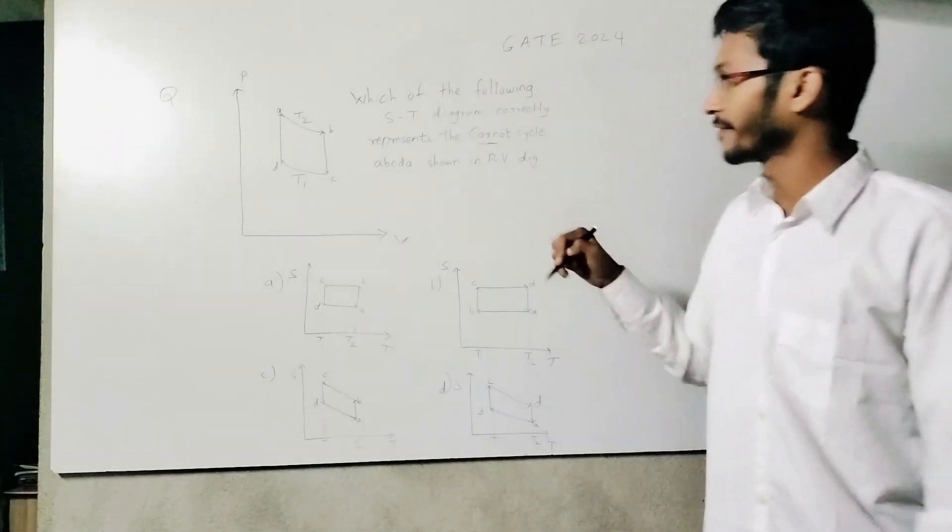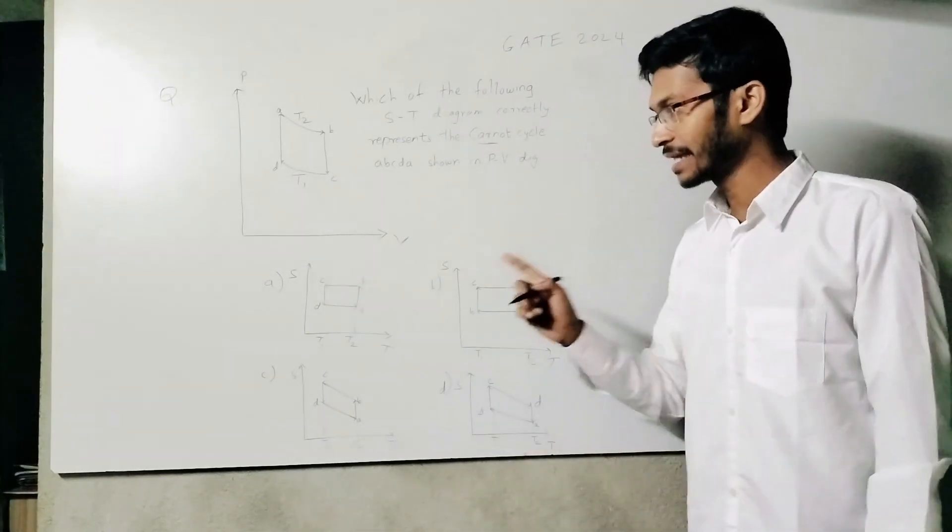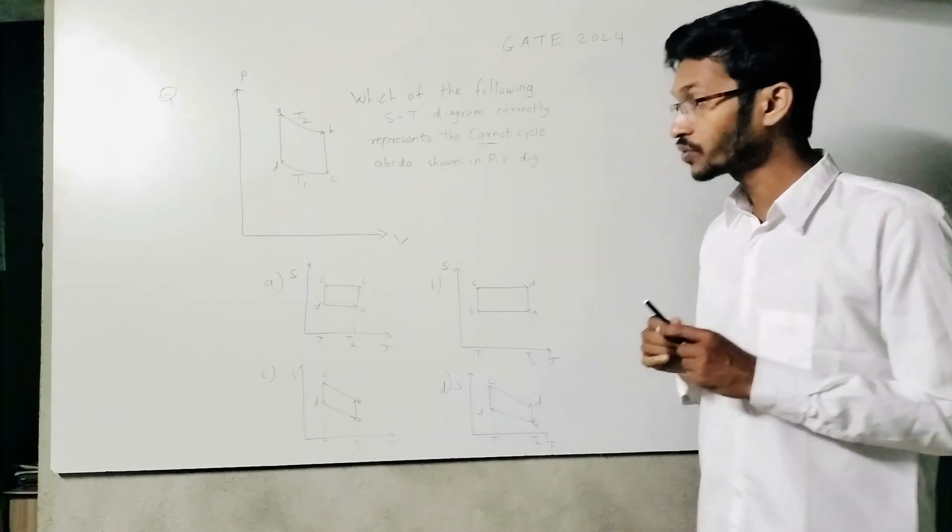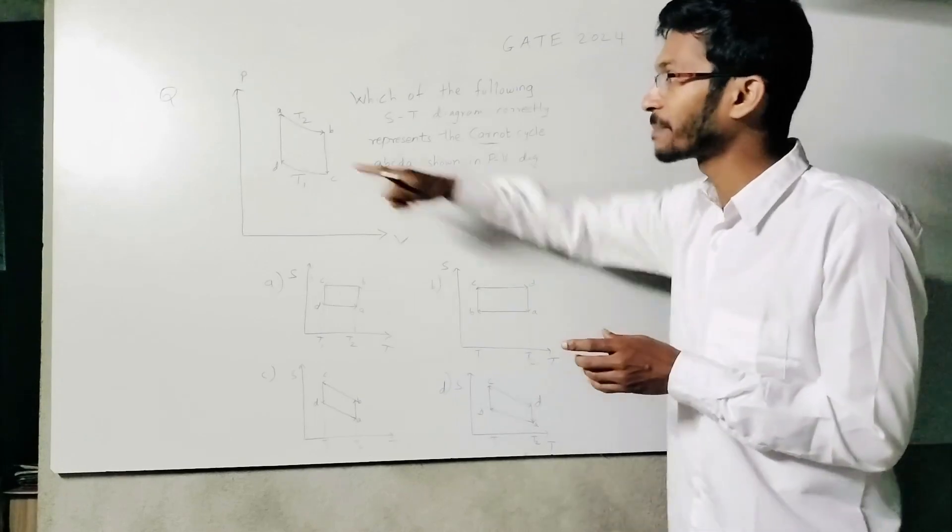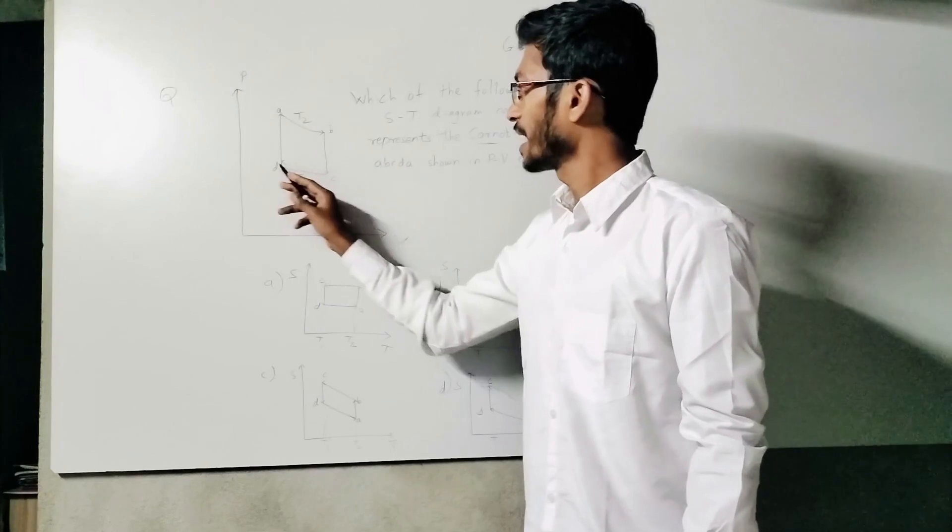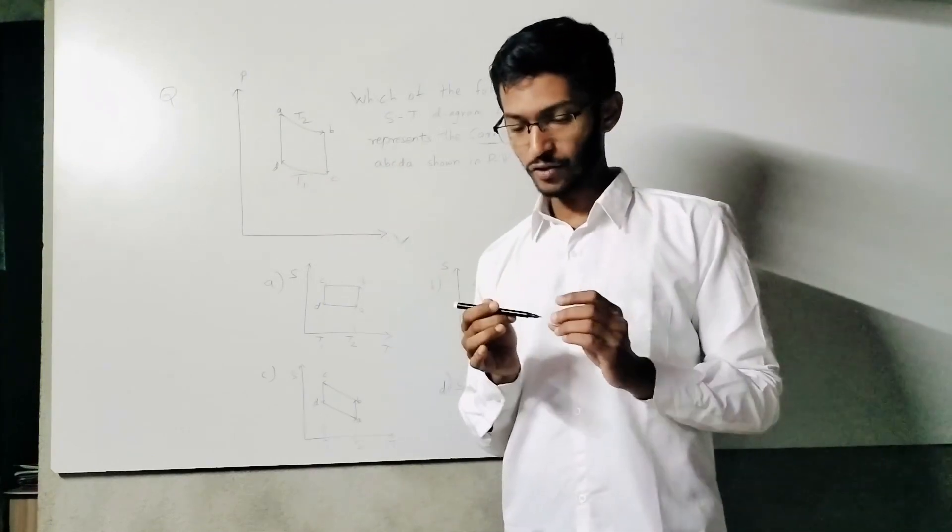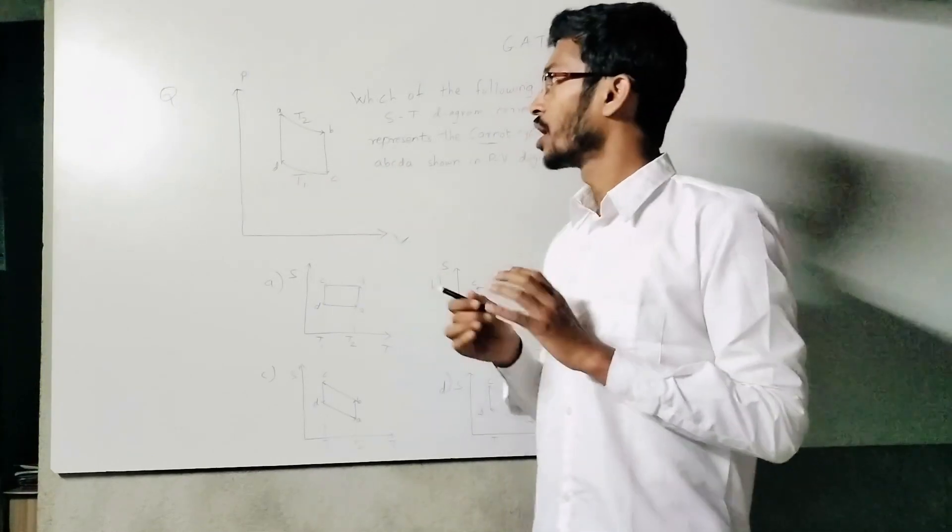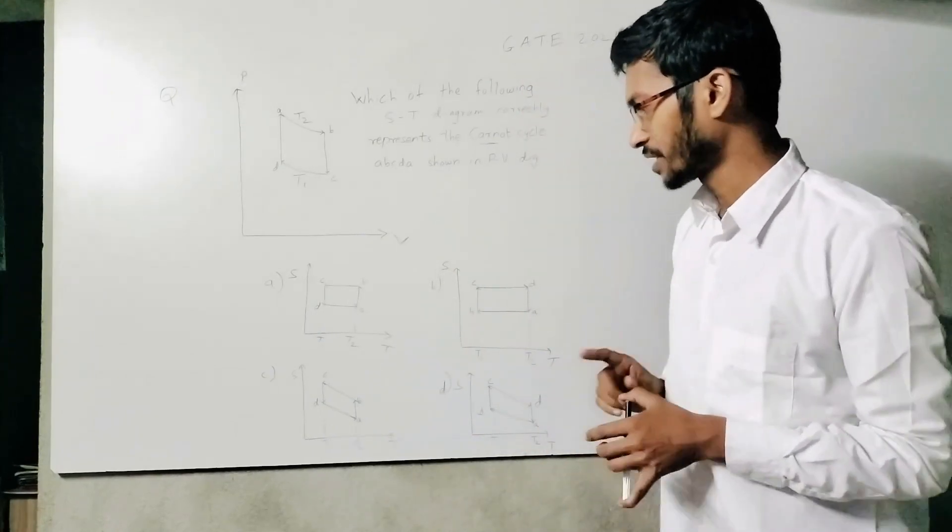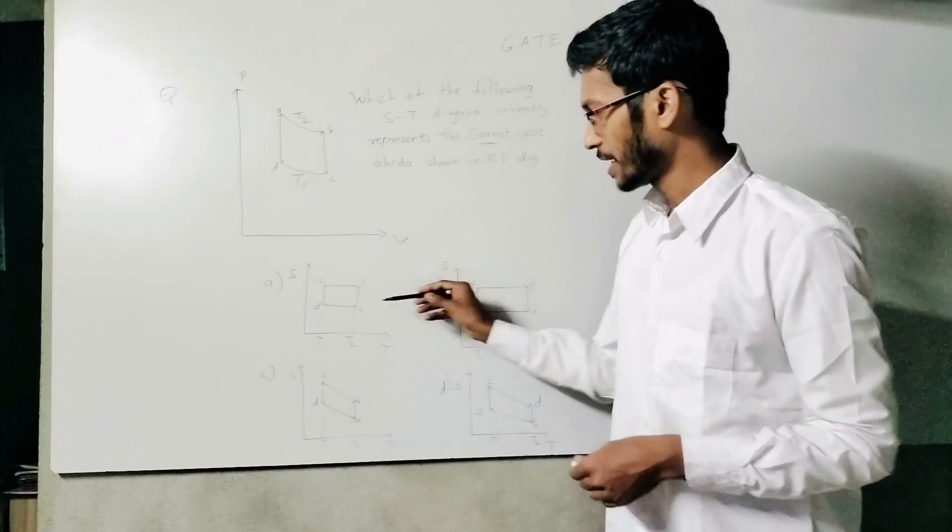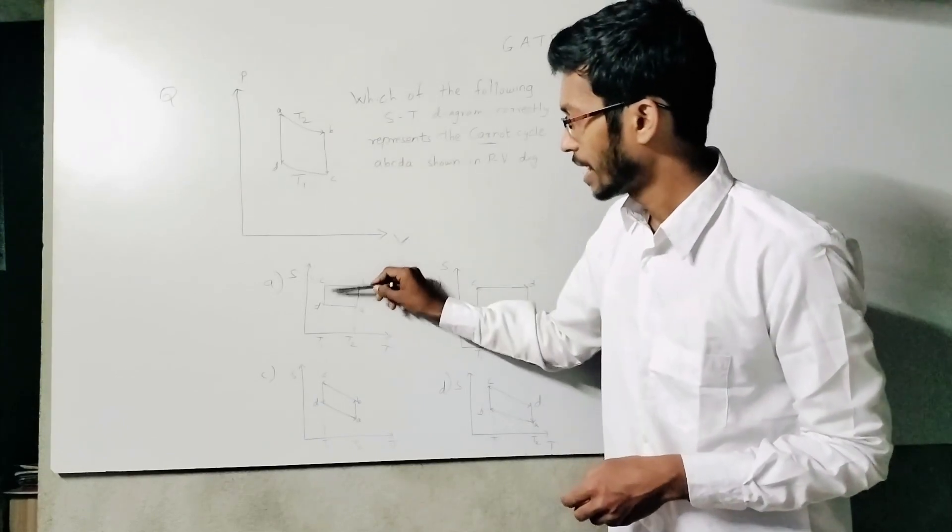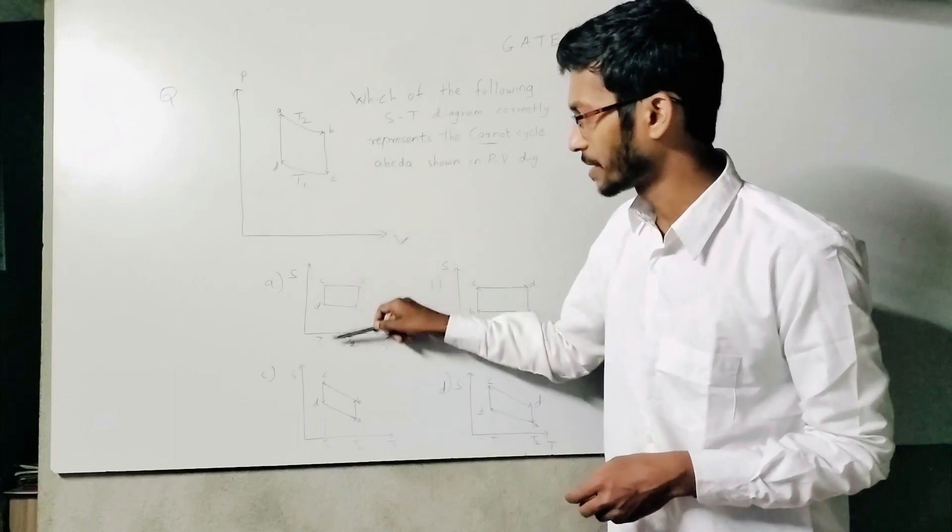We have four options of S versus T (entropy versus temperature) diagrams, and we need to select the one correctly representing this. First, AB and CD are isotherms, meaning they occur at constant temperature. In option A, A to B happens at temperature T2, which is correct, and C to D happens at temperature T1.